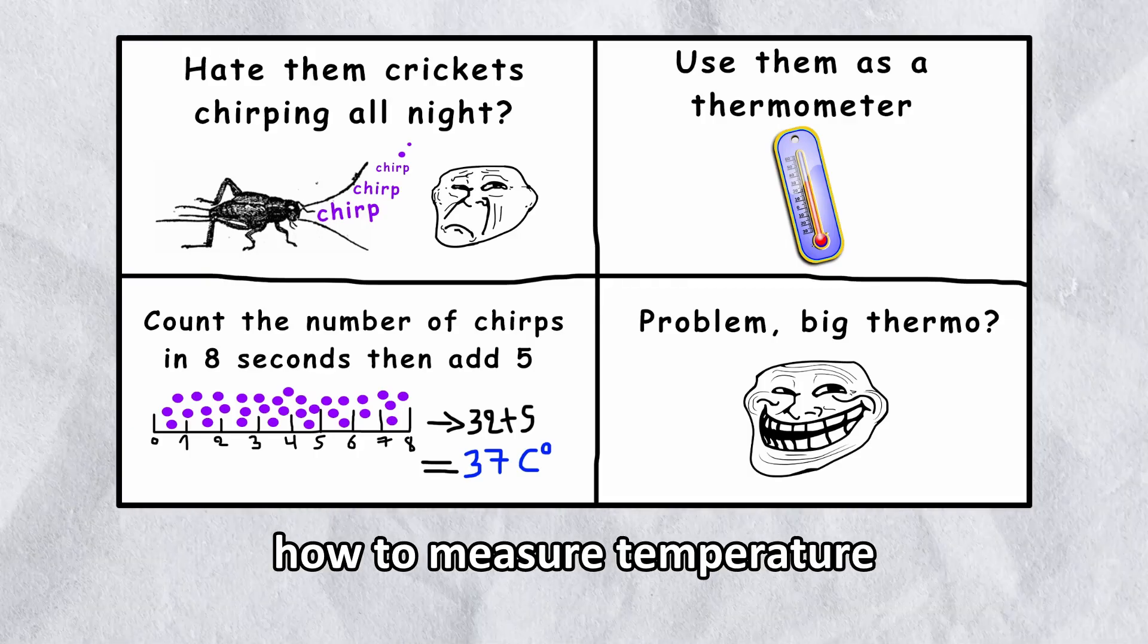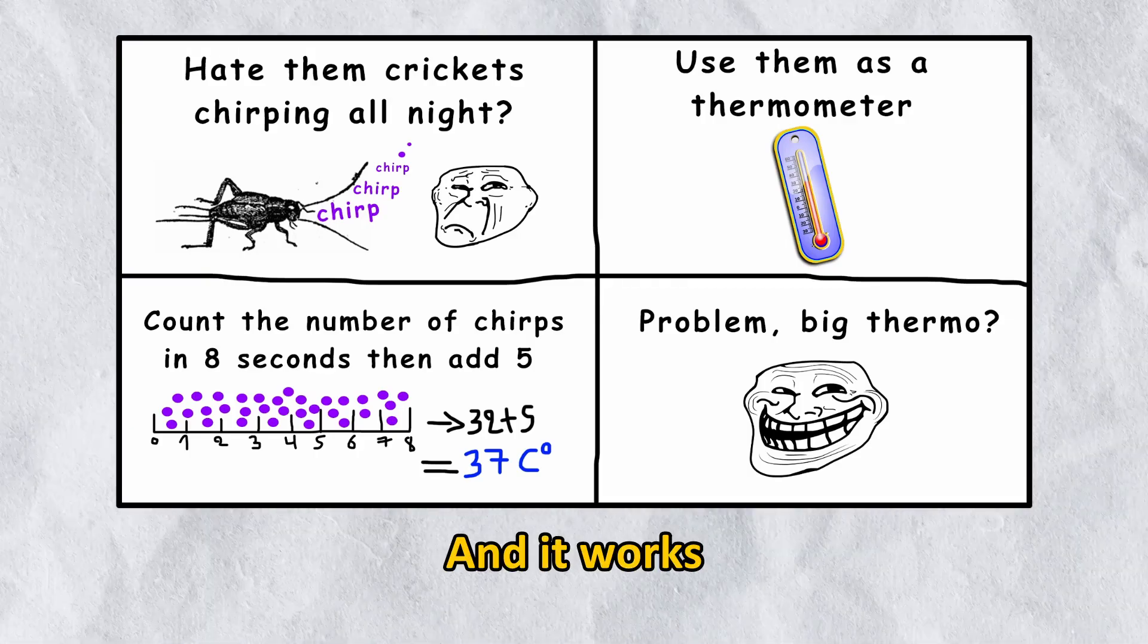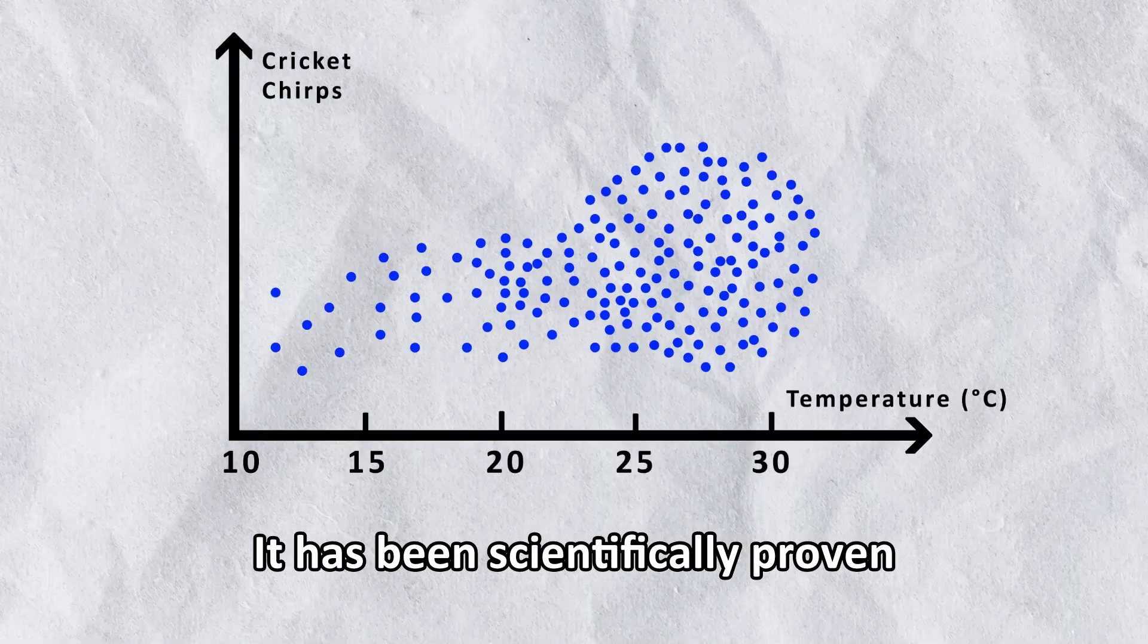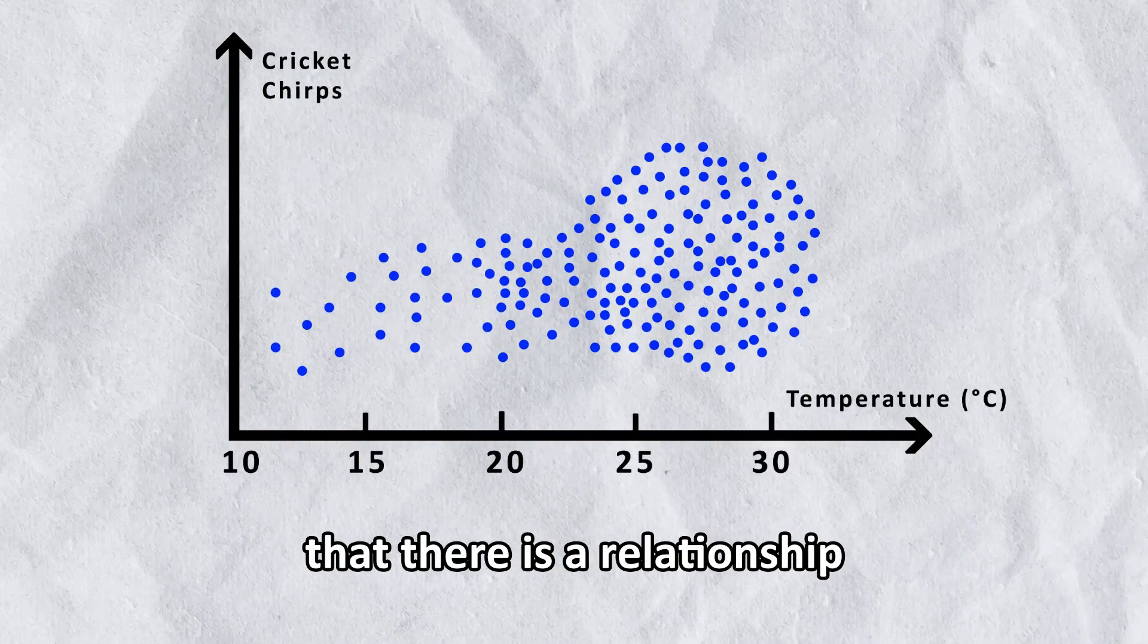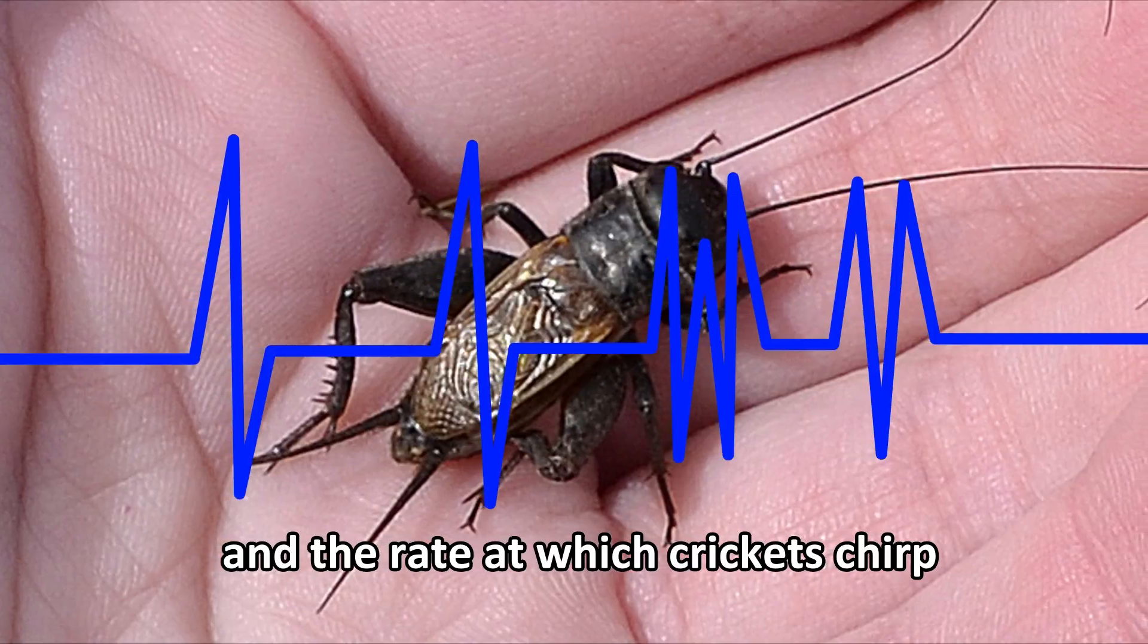This panel shares with us how to measure temperature by listening to crickets, and it works. It has been scientifically proven that there is a relationship between air temperature and the rate at which crickets chirp.